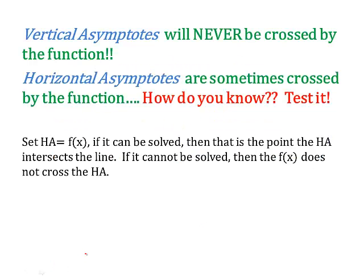First of all, remember: vertical asymptotes will never be crossed by the function — never. You can count on that. Horizontal asymptotes are sometimes crossed by the function. How do you know? I'm going to show you how to test it to find out.